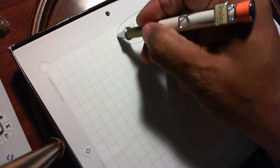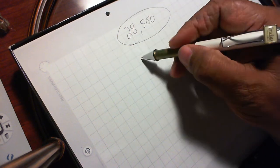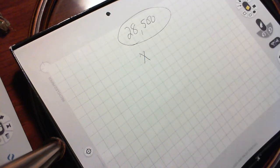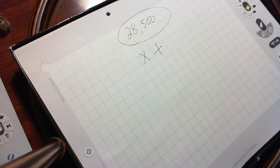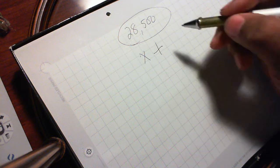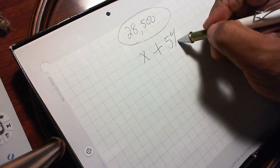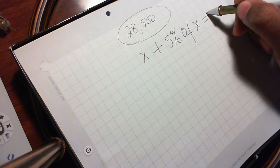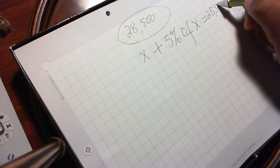The list price is this. So this is dealer cost, which is x, let it be x, plus 5%, that's the markup, of x, of the dealer cost, is equal to $28,500.